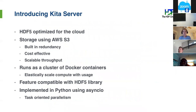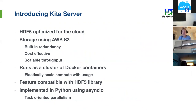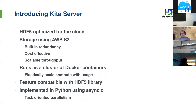One challenge regarding HDF5 is that it was designed before the cloud became a common platform, so there are various issues with using HDF5 in the cloud — primarily because the HDF5 library requires a POSIX file system. A few years ago we started a project sponsored by NASA where we created an HDF data server: HDF5 optimized for the cloud, using object storage — namely AWS S3 — rather than POSIX file storage.